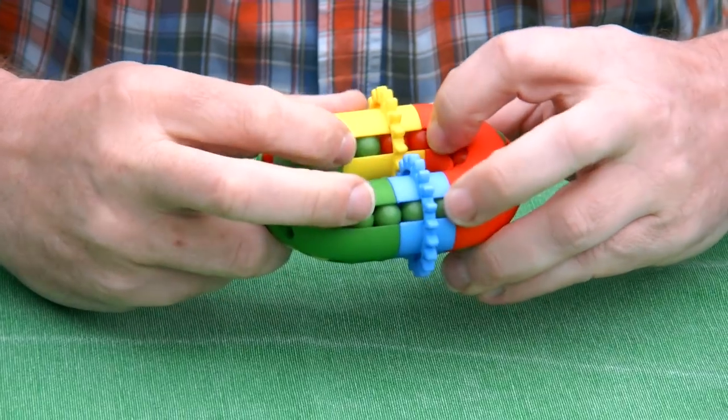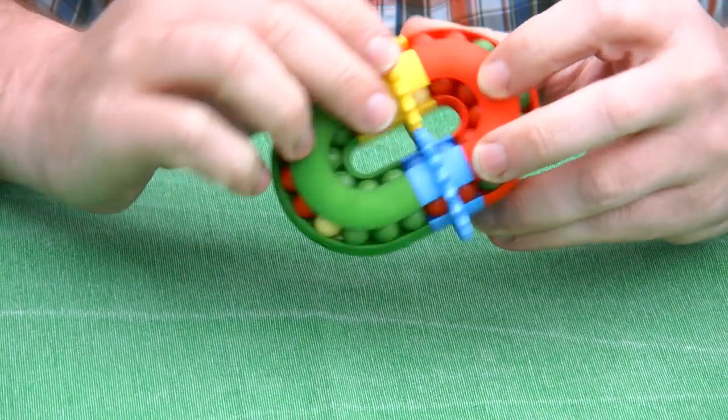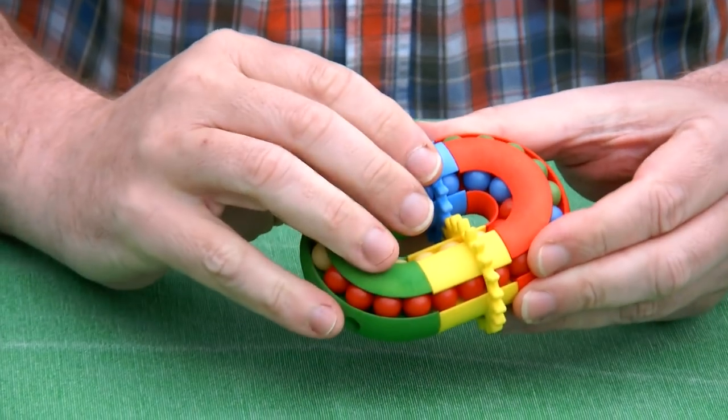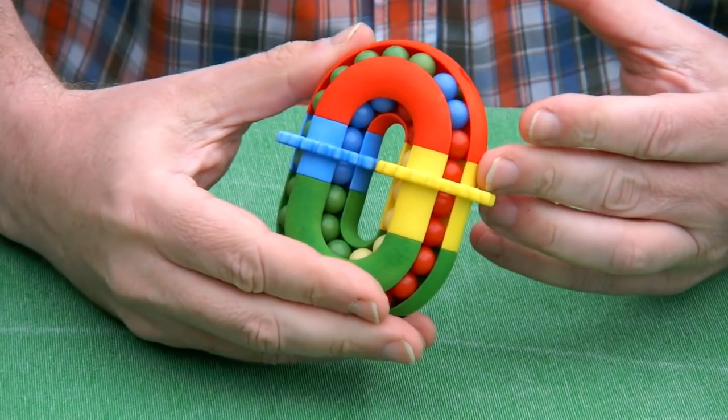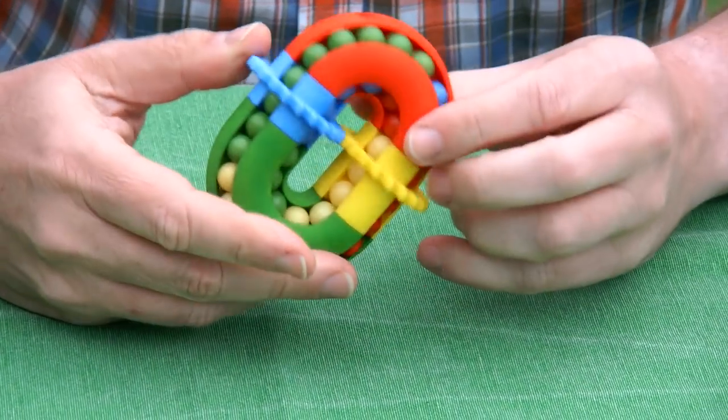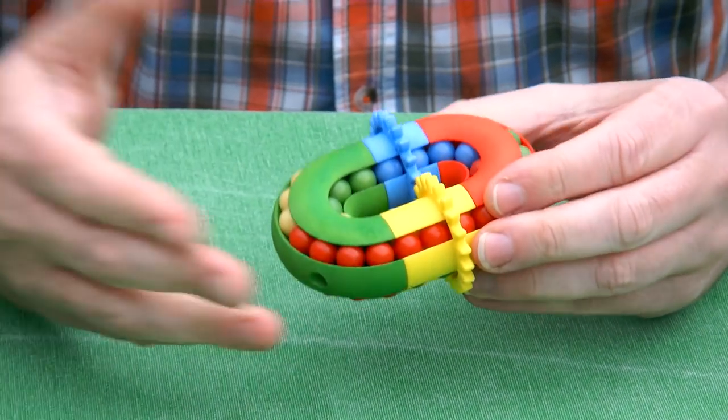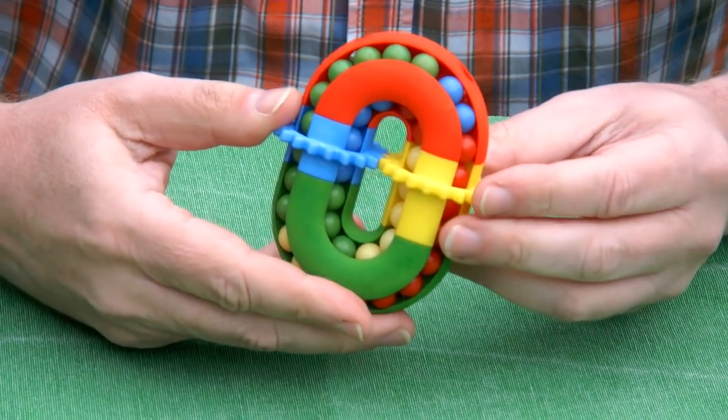Scramble this side as well. Then do yet another gearing move. And after just a few moves everything is quite well scrambled. So I assume that this is a very difficult twisty puzzle.